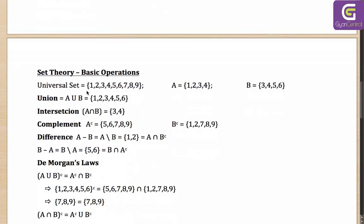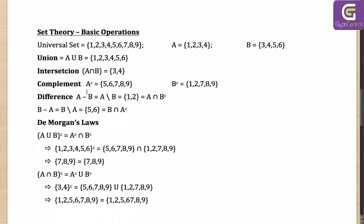Moving on to basic operations. Let's say the universal set is {1, 2, 3, 4, 5, 6, 7, 8, 9}, set A is {1, 2, 3, 4}, and set B is {3, 4, 5, 6}. Union means any element which appears either in A or in B. So A union B will be {1, 2, 3, 4, 5, 6}.